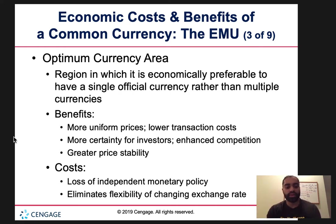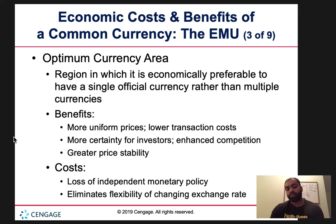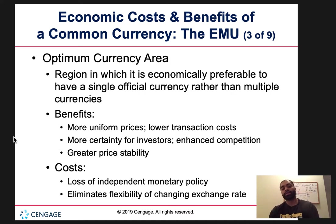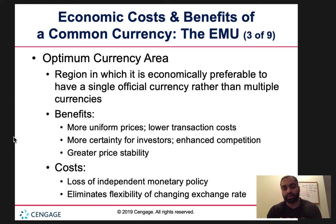The cost of this is a loss of independent monetary policy. Let's say Germany wants to implement a different monetary policy compared to Spain — that's not possible. The European Central Bank implements an overarching blanket policy that all EU countries must abide by. Not every country agrees with increasing or decreasing the money supply. It also eliminates the flexibility of changing exchange rates.